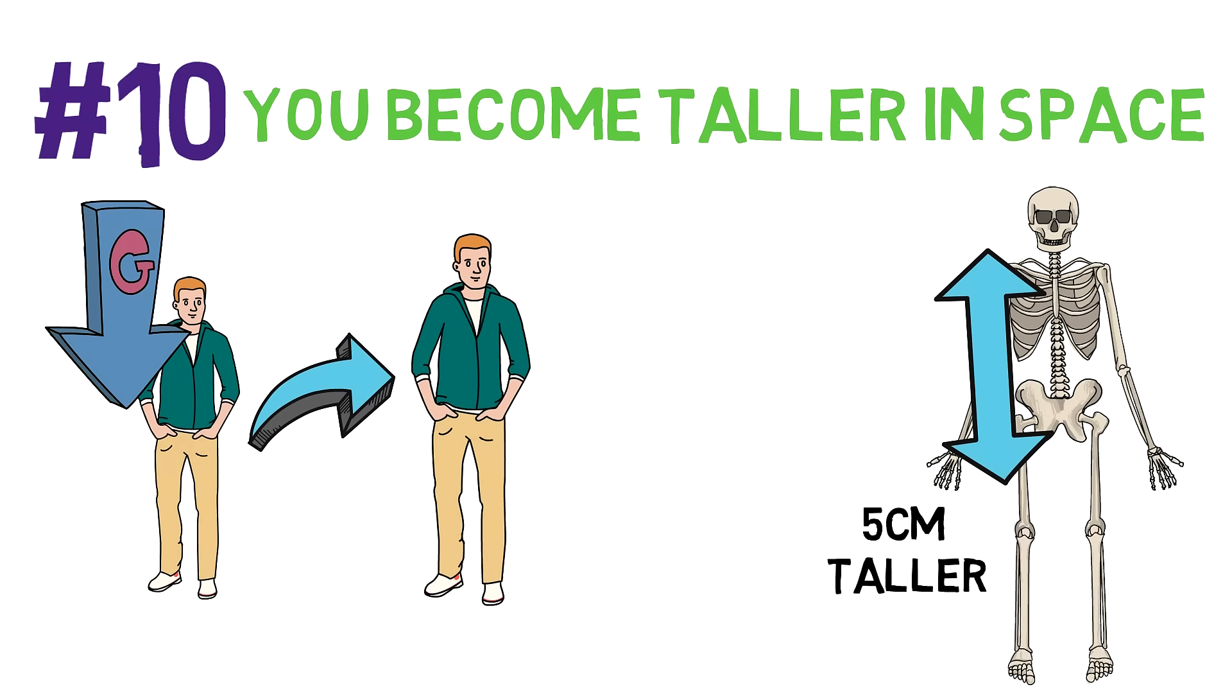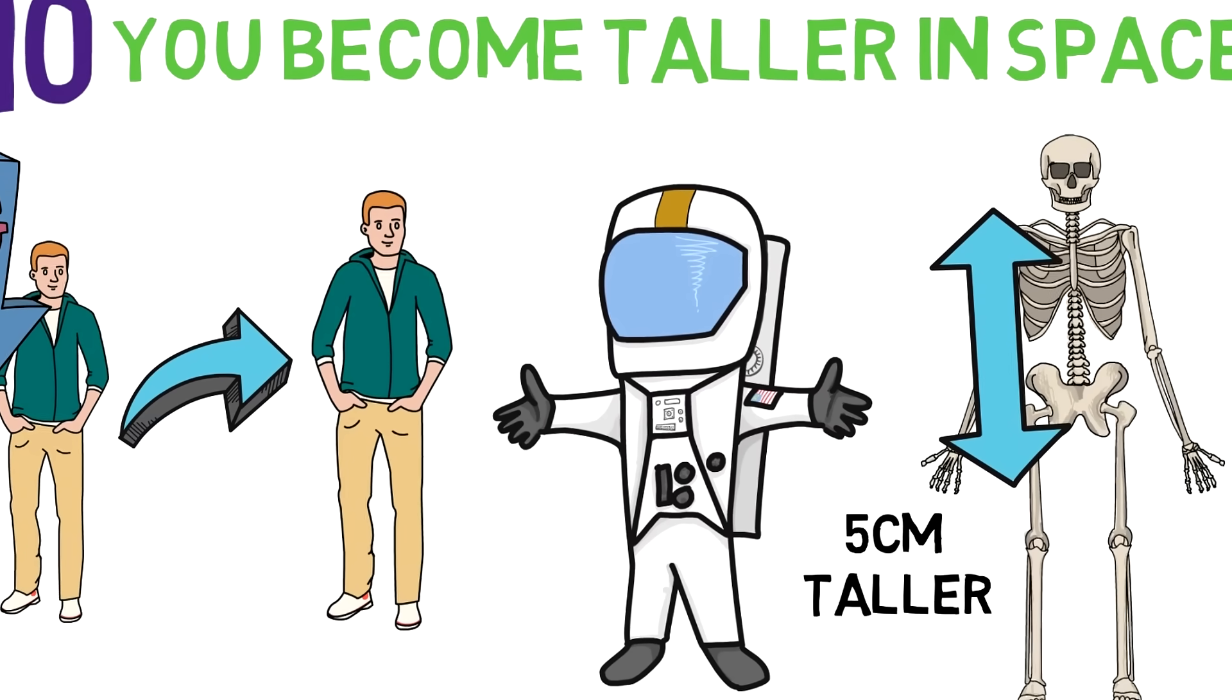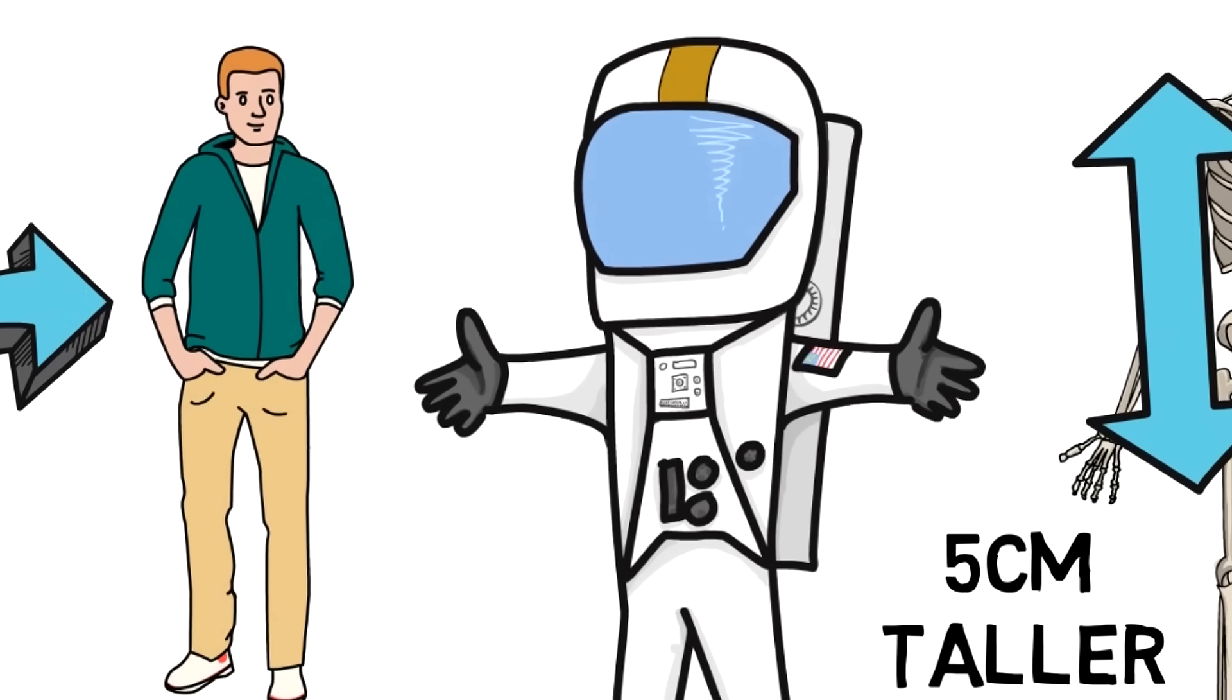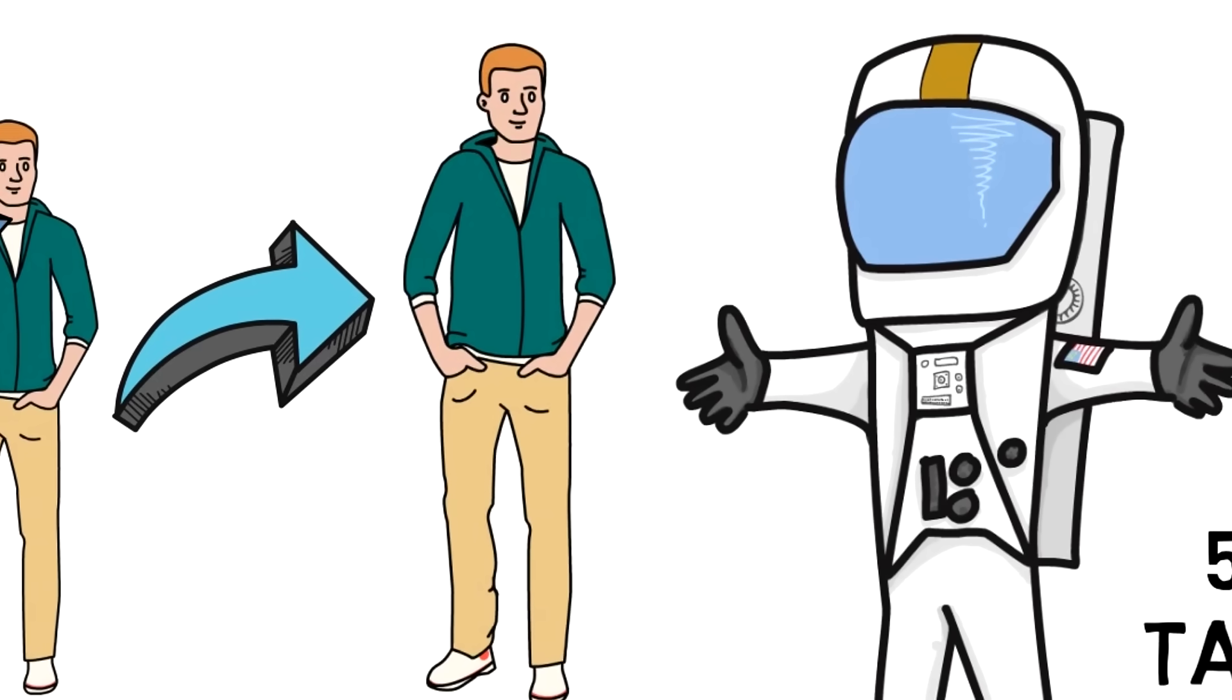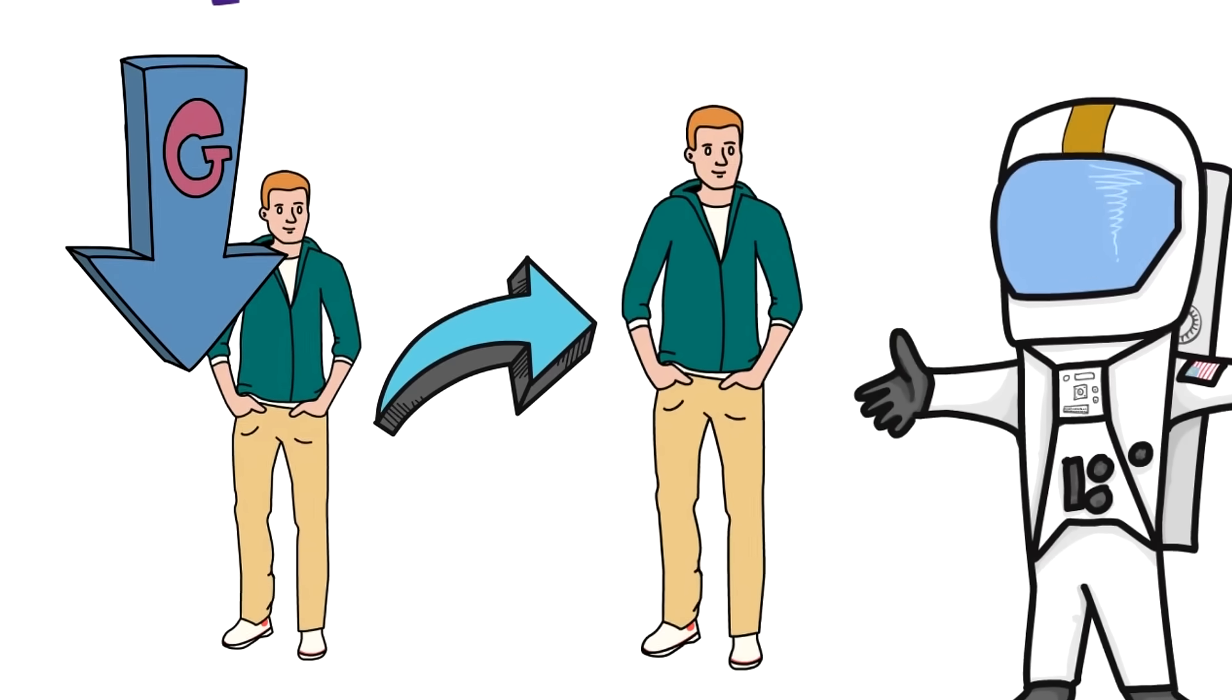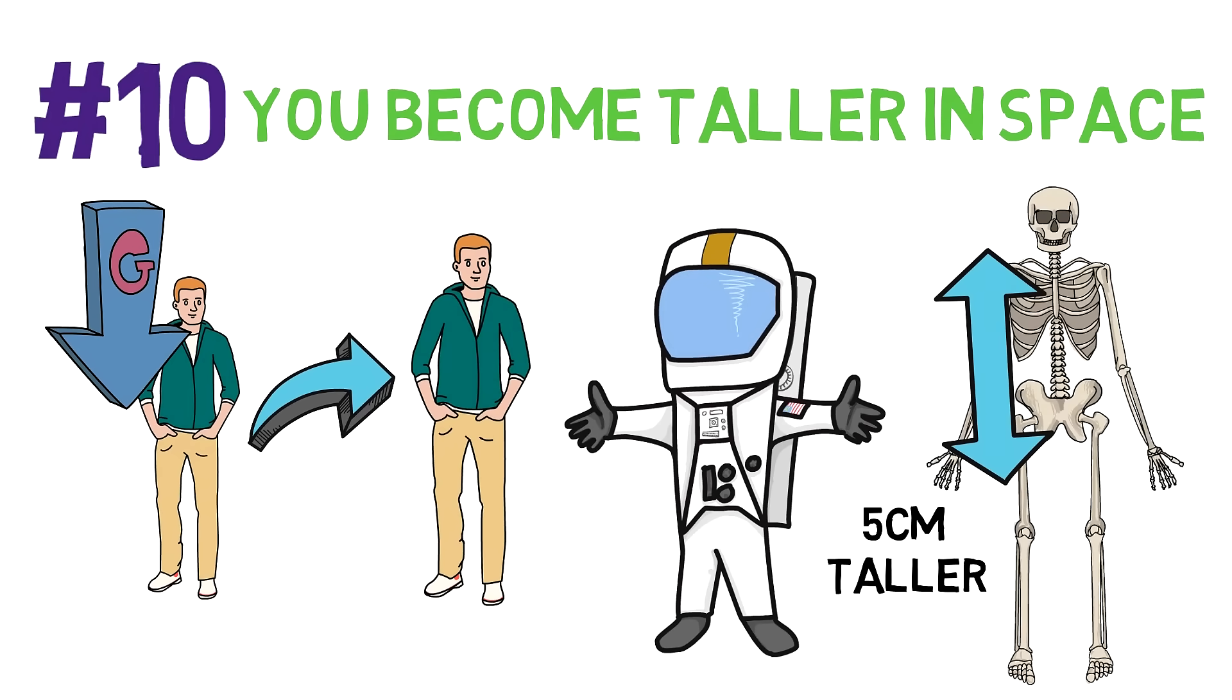This happens a lot with astronauts who spend time at the International Space Station. Recently, Japanese astronaut Kanai tweeted saying he grew 2 centimeters after coming back from space. So hey, if you want to get taller, just become an astronaut. It's that simple. However, once you get back to Earth, the planet's gravitational pull will probably reverse the whole process and your height will go back to what it was before.